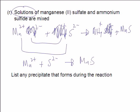List any precipitate that forms during this reaction. The precipitate is the one who participates, the one that stays together. In that case, that's MnS. Manganese sulfide is the precipitate.